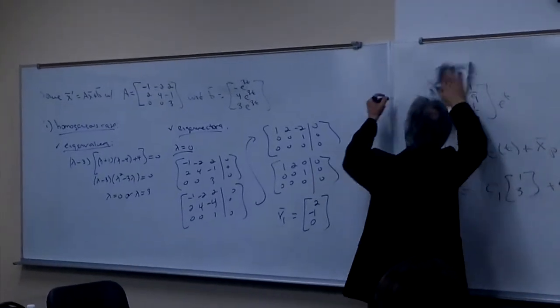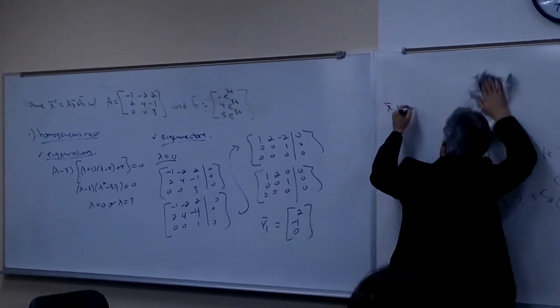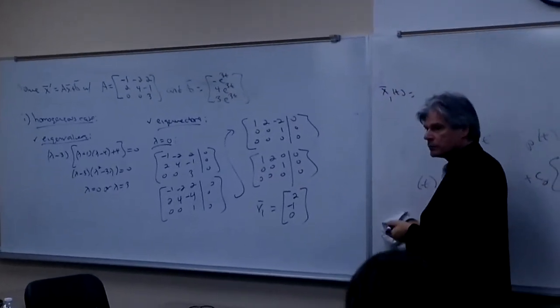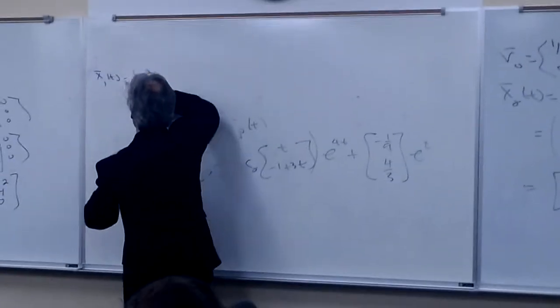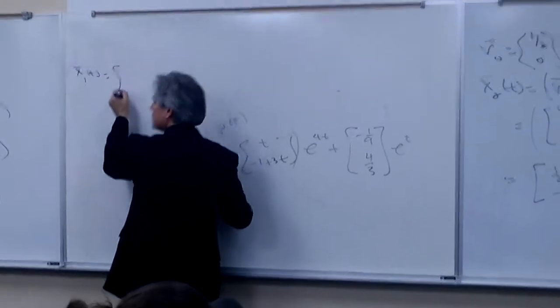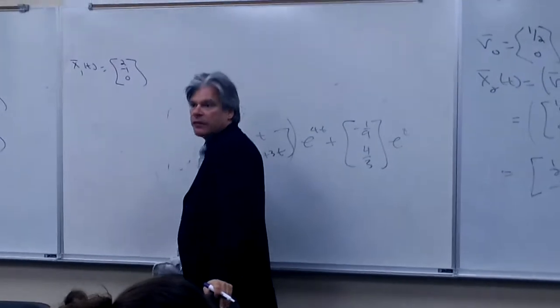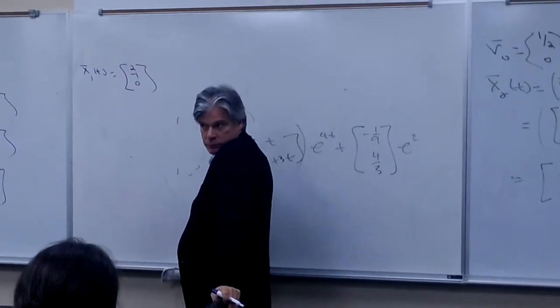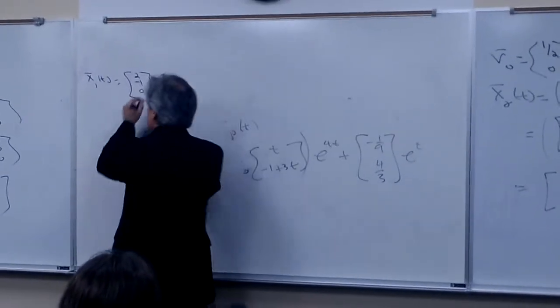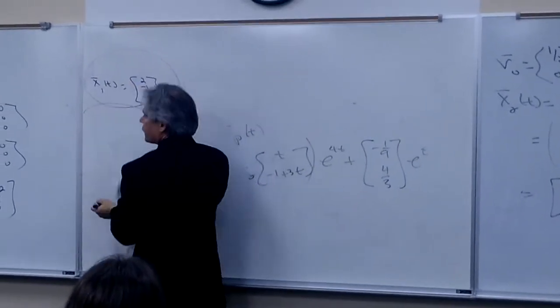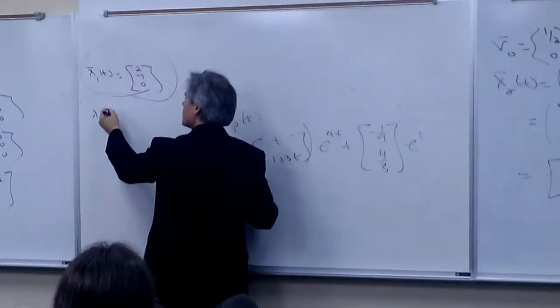And so, I think my x1 bar of t is simply going to be, is that just going to be a constant factor? Because I get my 2 negative, excuse me, 2 negative 1 zero, times my e to the lambda t, because that's just e to zero, which is just one. Now, I maintain that if I'm going to look for a second solution, I better go to the second eigenvalue. And with the second eigenvalue, it's going to be positive three. Let's see what we generate.